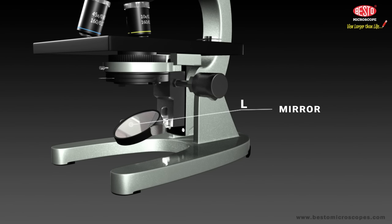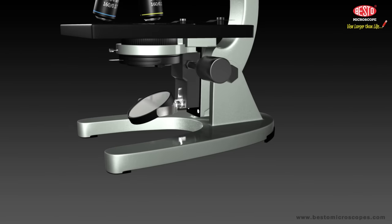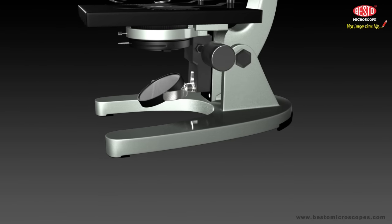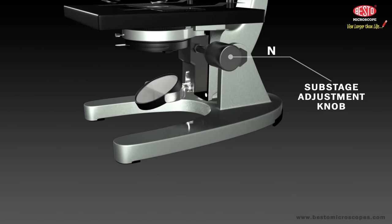Sometimes we use a lamp plugged into an electrical outlet instead of mirror or reflector. M. The base of the microscope is the heavy bottom part. It supports all the other parts of the microscope.